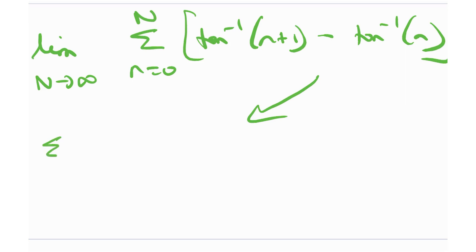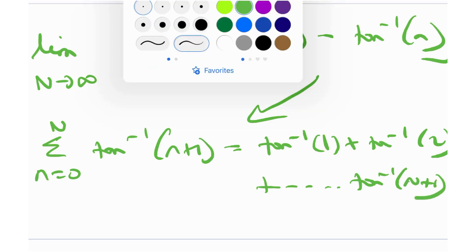So for example, we have sum from n is equal to 0 to N of tangent inverse n plus 1. How would this look like? This would be tangent inverse 1 plus tangent inverse 2 plus tangent inverse 3. And it would go all the way up to tangent inverse N plus 1.